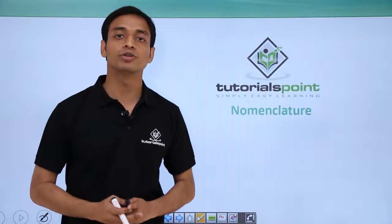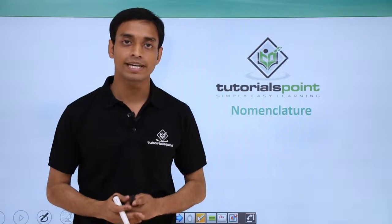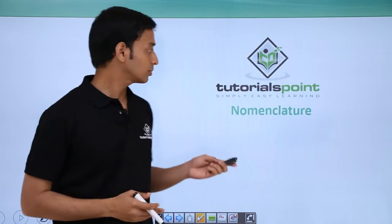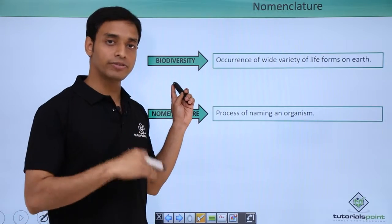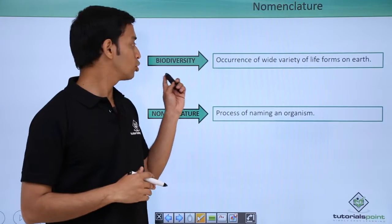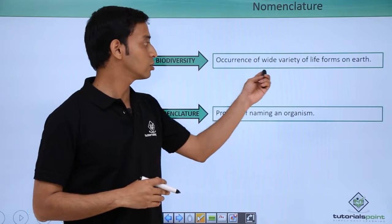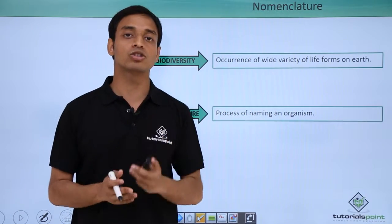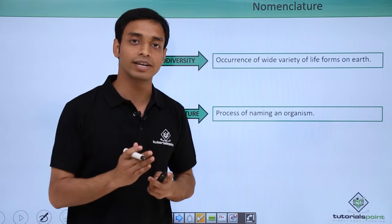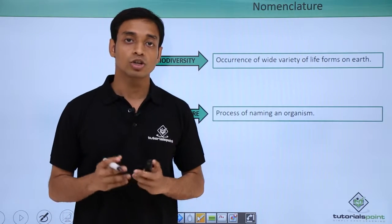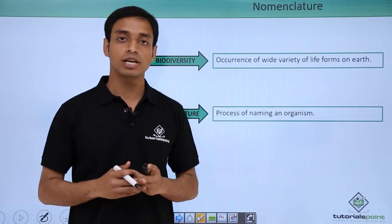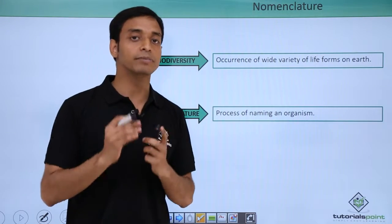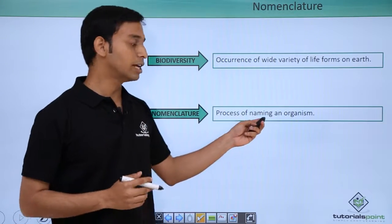Welcome to Tutorials Point. In this video we are going to talk about nomenclature. We have already in our previous videos talked about biodiversity, which means the occurrence of a wide variety of life forms on earth. We have also talked about the presence of 1.7 to 1.8 million species. With such a large number of species, in order to identify them, we need to name them.